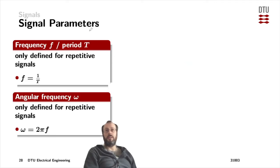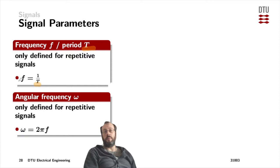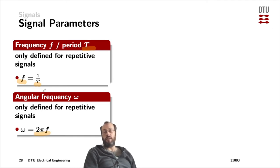Another signal parameter is the frequency, which relates directly to the period T. The frequency of a periodic signal, F, is 1 divided by its period. And then there is the angular frequency, which is 2 times pi times the linear frequency.